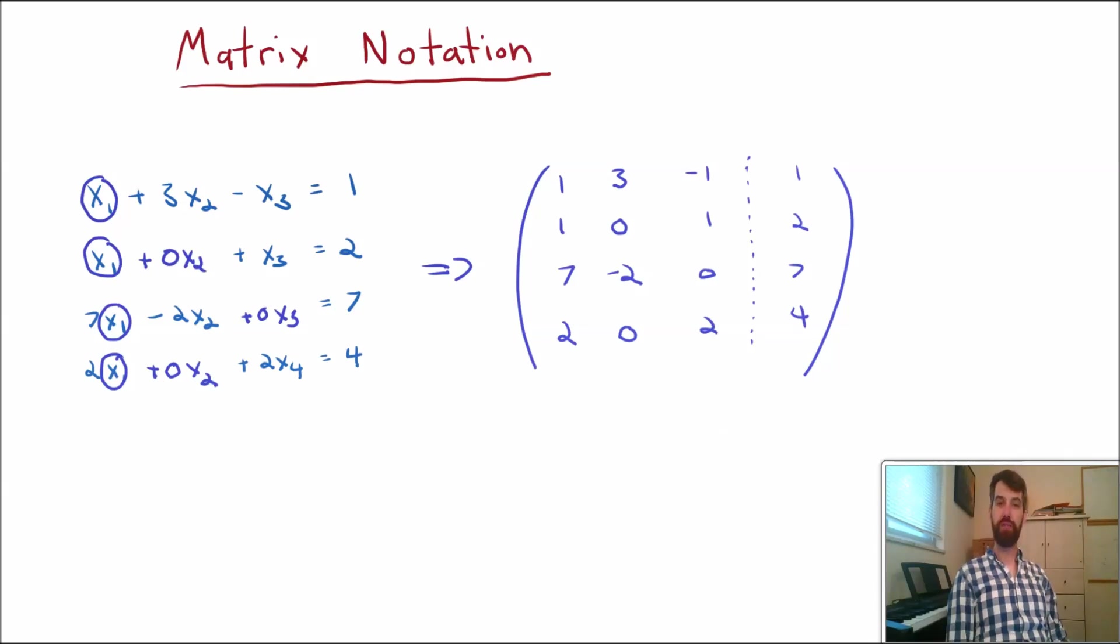A few little pieces of terminology here. This portion, the portion of the matrix that's to the left of my dotted line here, that refers to all of the coefficients to the variables, this is uninspiringly referred to as the coefficient matrix. The portion which is on the right hand side, the stuff that corresponds to the constants, is referred to as the constant matrix.